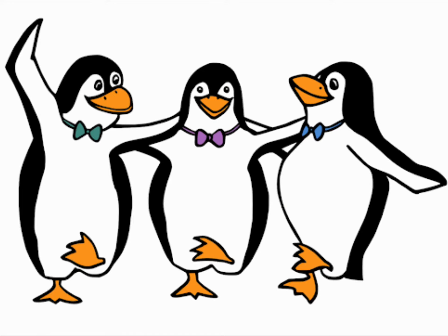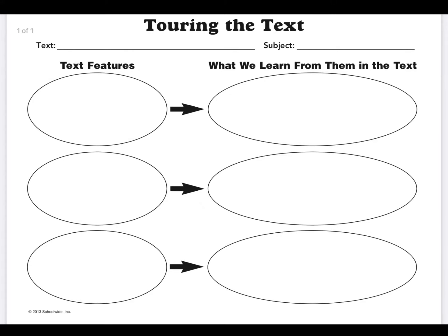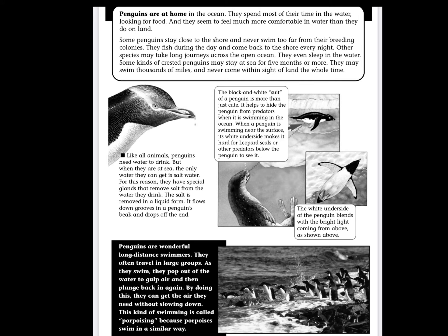In our last lesson we spent time activating our prior knowledge on this topic and developing new knowledge. Today we will tour the text of the new passage we're going to read, which means we're going to notice all the different text features used in the article and use those features to prepare us to read the rest of the article. Let's take a look.